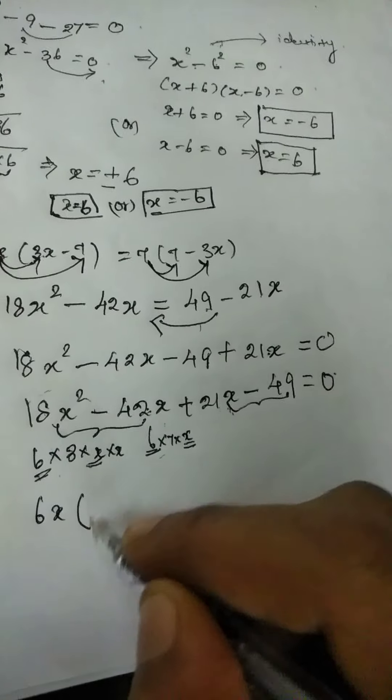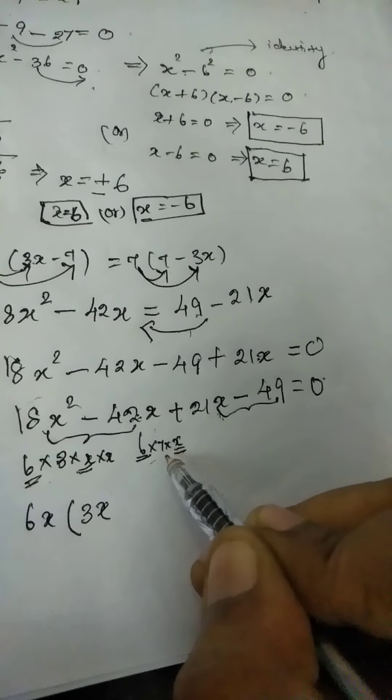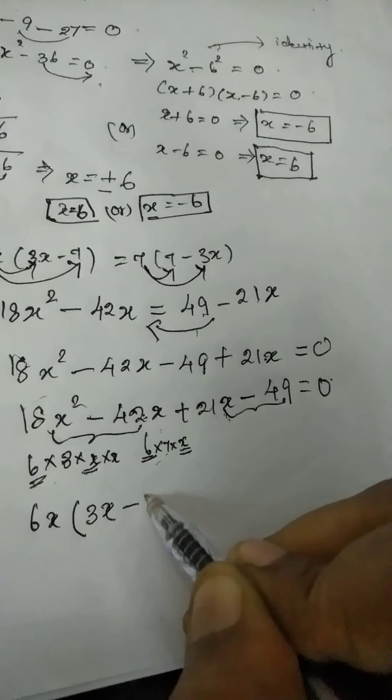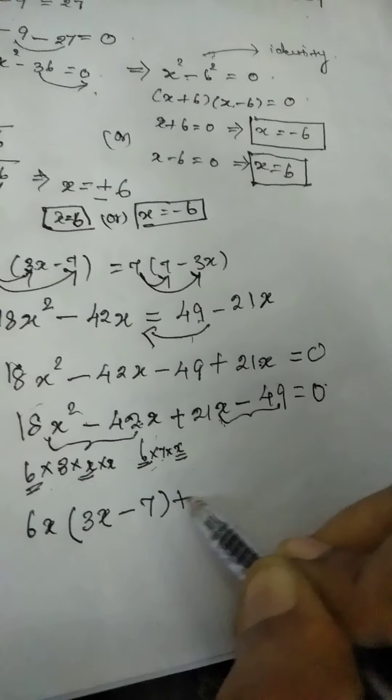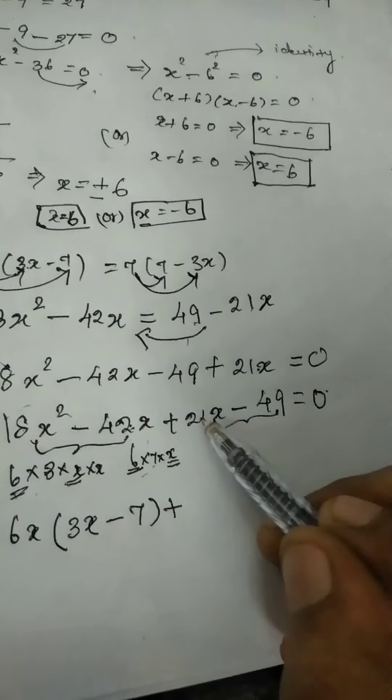So I have 6x is common for both the numbers. So I can take out 6x commonly outside. What is remaining here 3 and x? So it is 3x and here it is remaining only 7 minus 7.